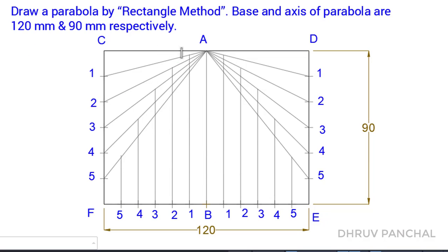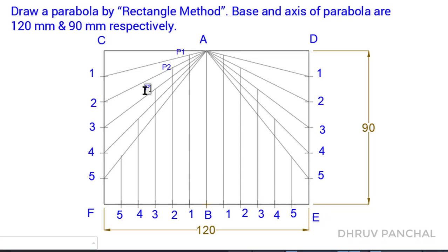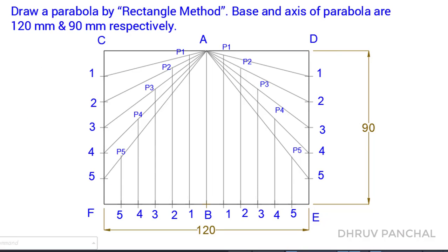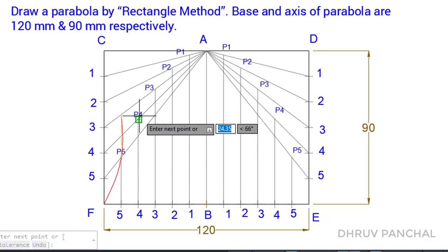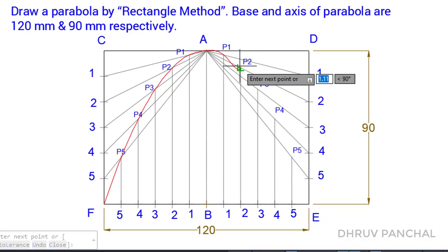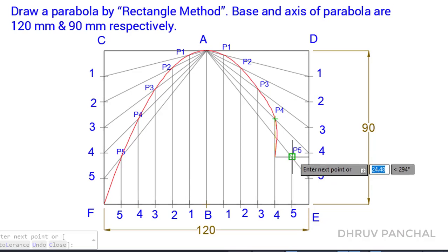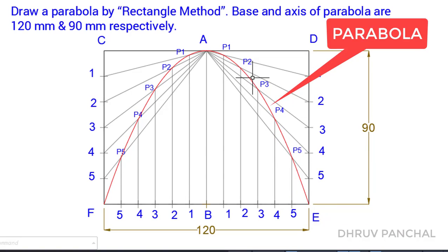After that, name all the derived points on both sides as point P1, P2, P3, P4, and P5. Now, with the help of a French curve, draw a smooth curve passing through all the derived points. This smooth curve is known as a parabola.